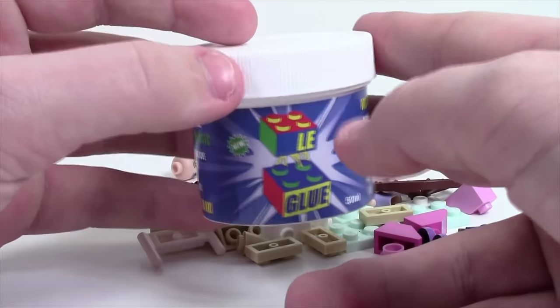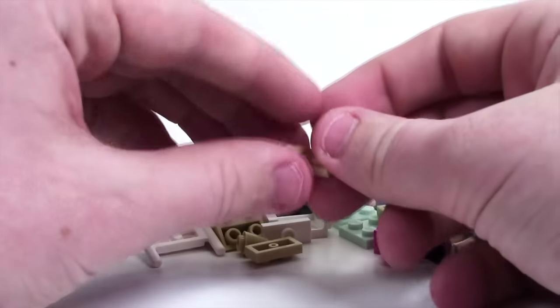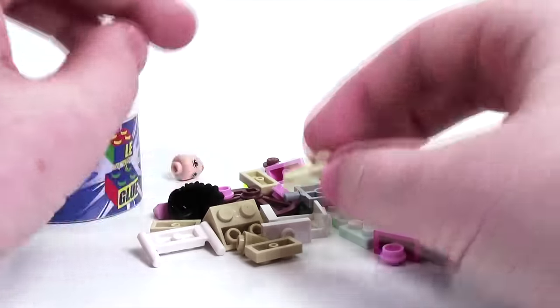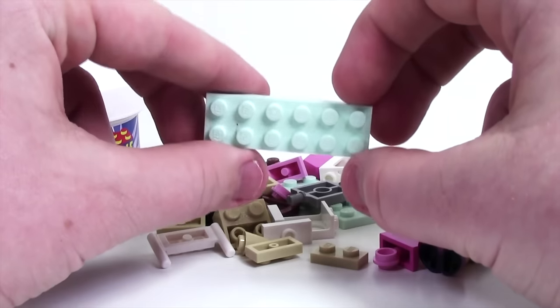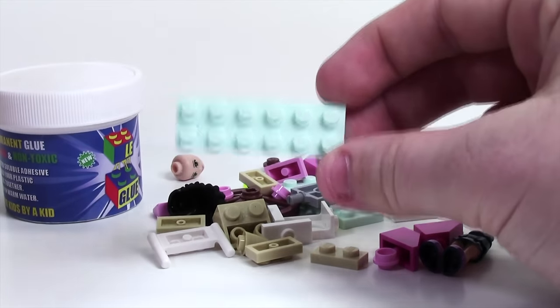Leg Glue is definitely a great product considering it works very well and took all the glue residue off these LEGO pieces just by putting them in water. You completely saw me do that. I didn't do anything else special and it was just plain water.